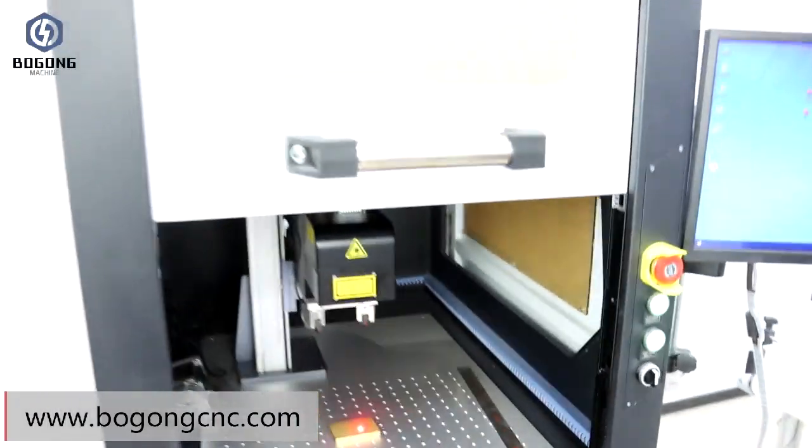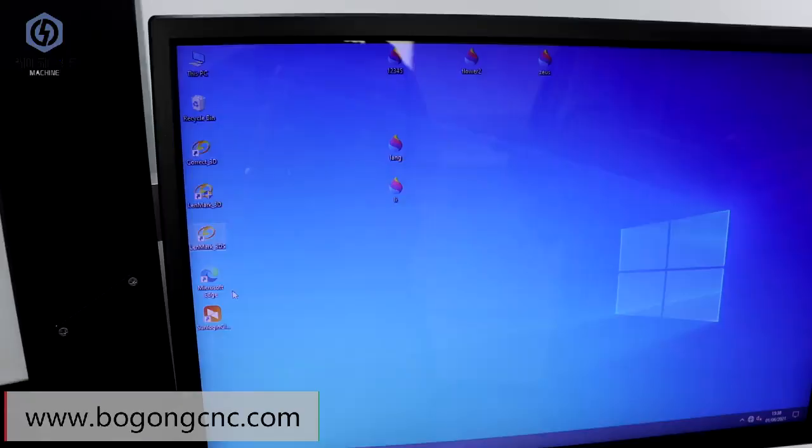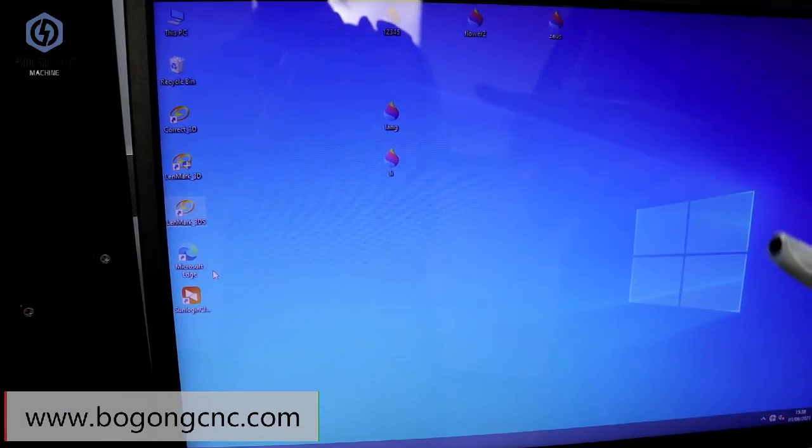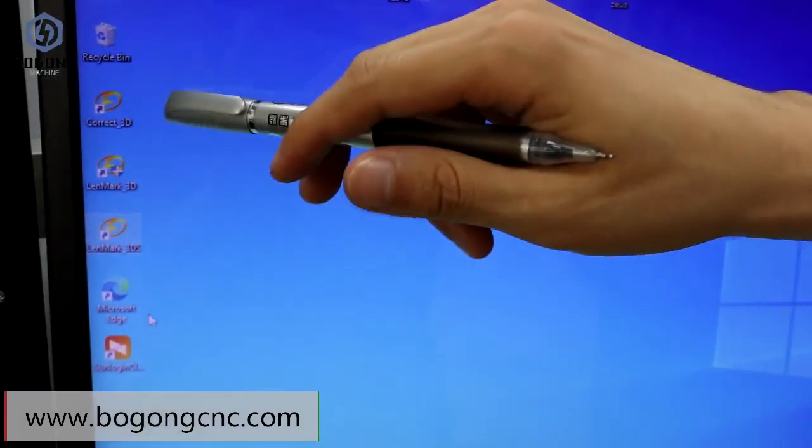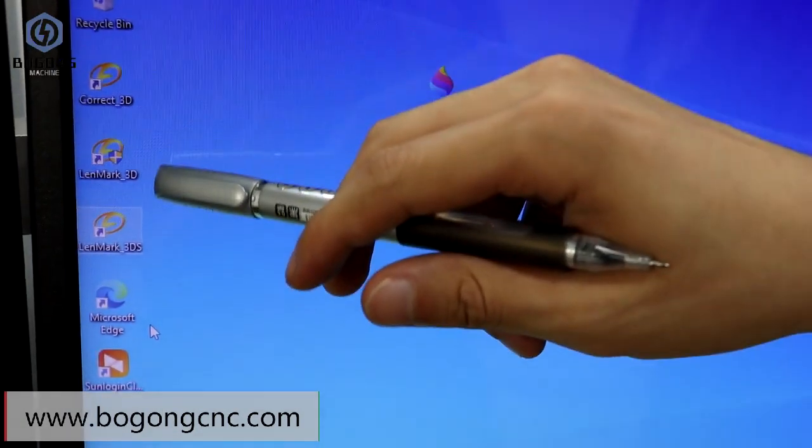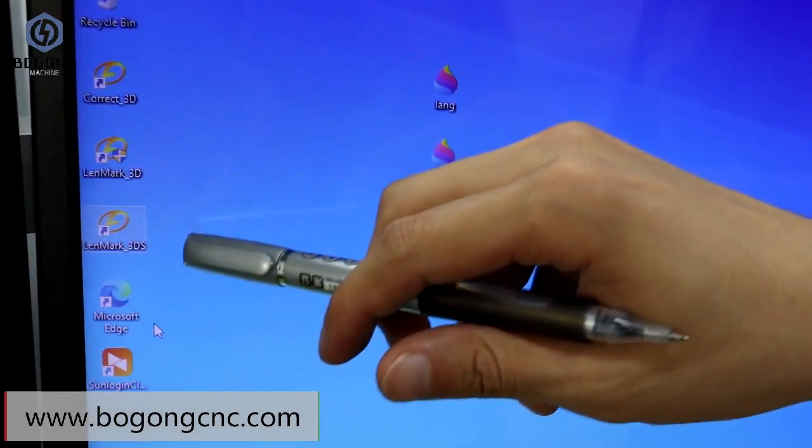Now we can start your work. Let's see the computer display. As we can see, there are three software: CorelDRAW 3D, Landmark 3D, and Landmark 3DS.